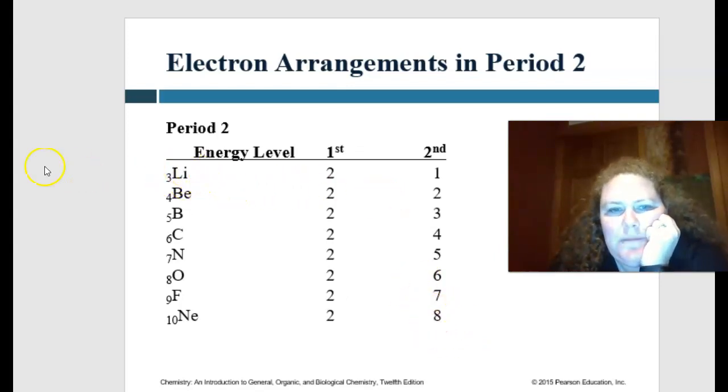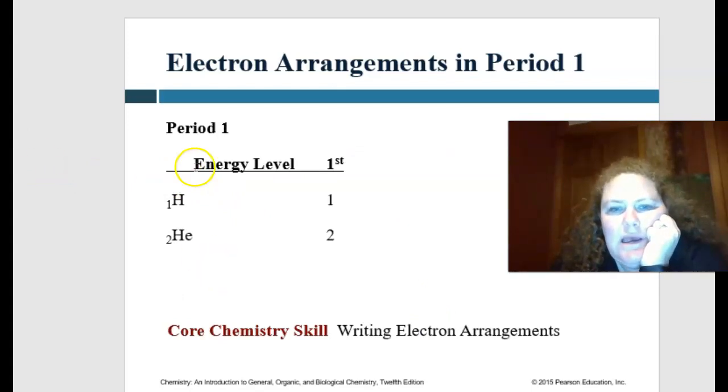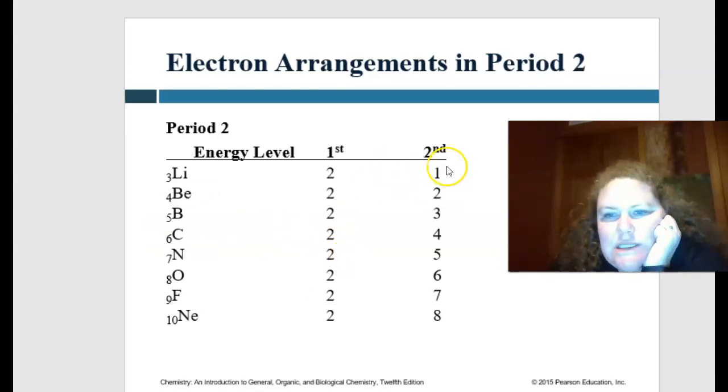Since hydrogen only has one electron, we're only going to have one in that first orbital. But helium has two electrons, so we're actually going to fill that first orbital with two electrons. But moving up to the second orbital, you can see that we can have up to eight electrons. And so your first orbital is going to be full first before you can go to the second.